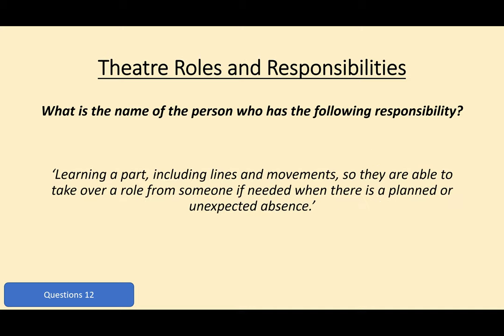Moving on to question 12. What is the name of the person who has the following responsibility? They learn a part — including the lines, the blocking, the movements — of someone in case they are ill, have an unexpected absence, or a planned absence. This person fills in for the principal actor if they are unable to perform on a specific night. For question 12, write down the name of the person or the appropriate theatrical role and responsibility.